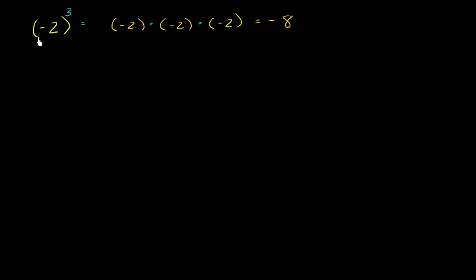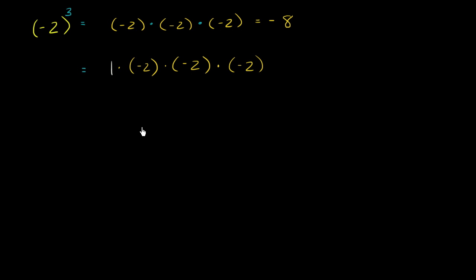Now another way of thinking about exponents — instead of saying you're just taking three negative 2's and multiplying — you could also view it as the exponent is the number of times you're going to multiply 1 by this number. So you start with a 1 and multiply it by negative 2 three times: times negative 2, times negative 2, times negative 2. You still get negative 8.